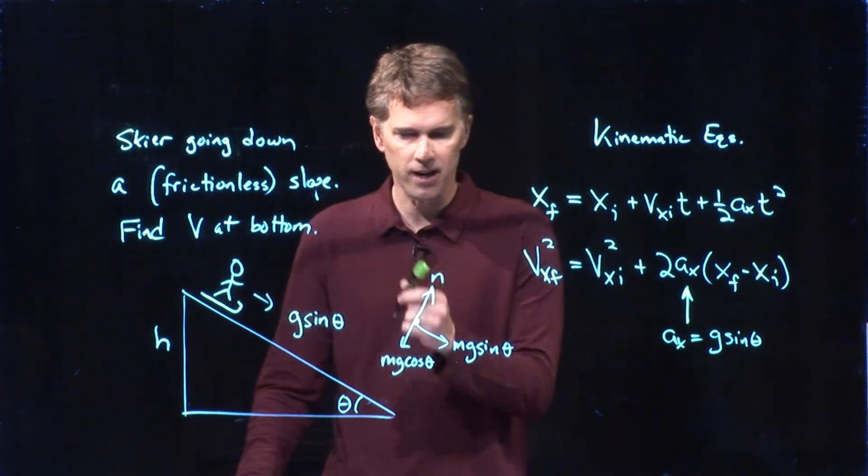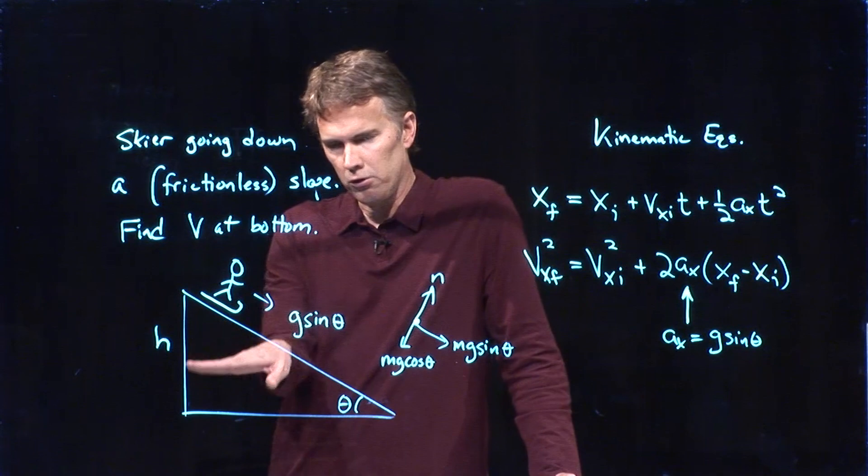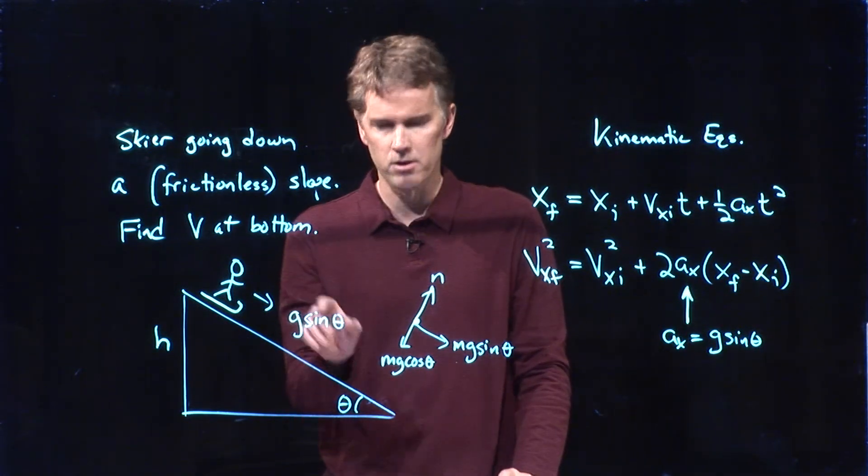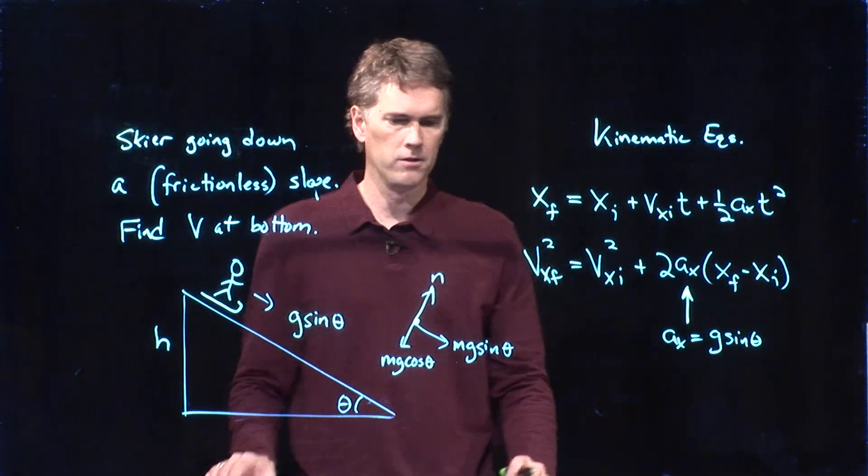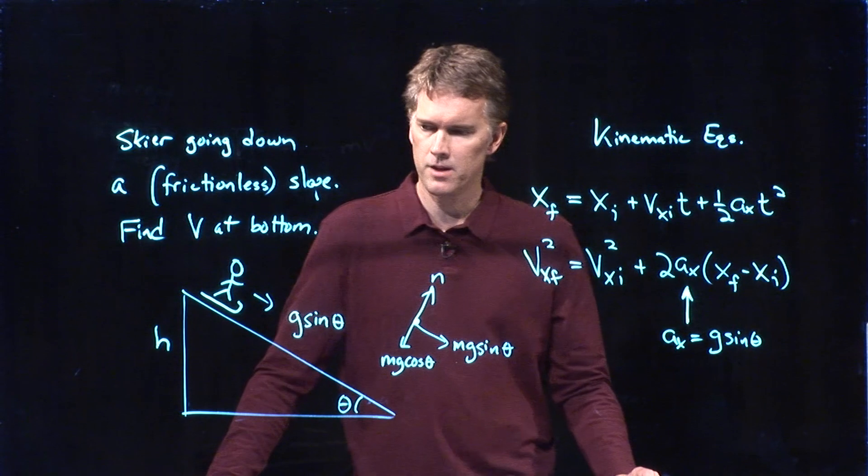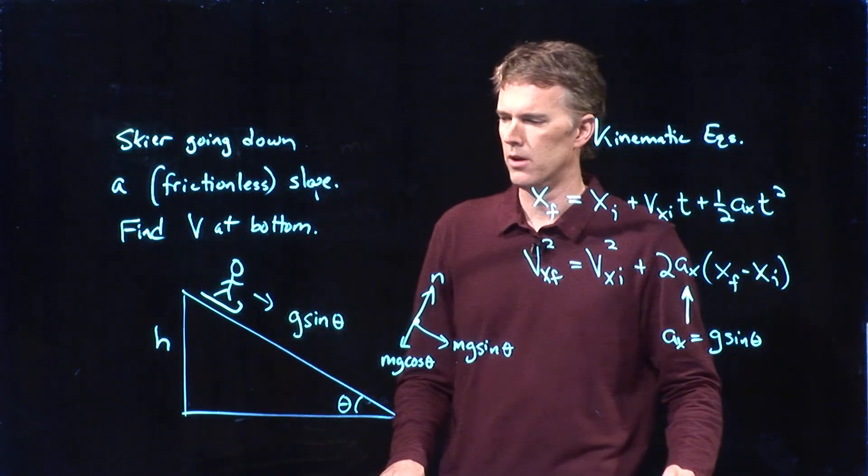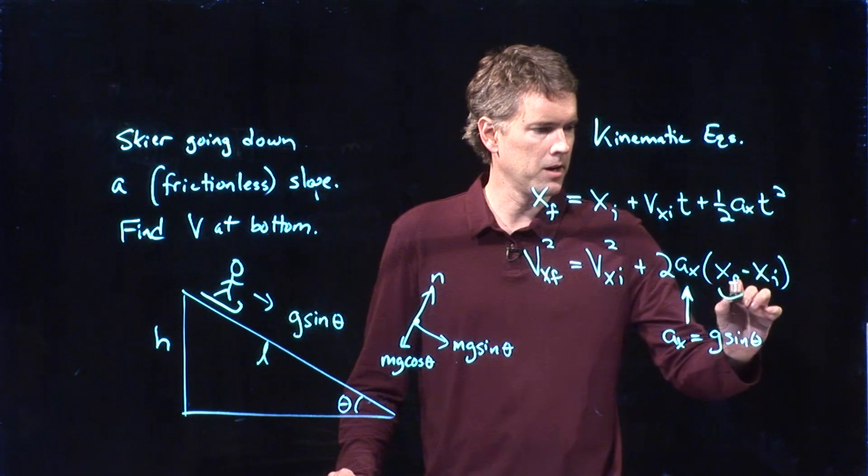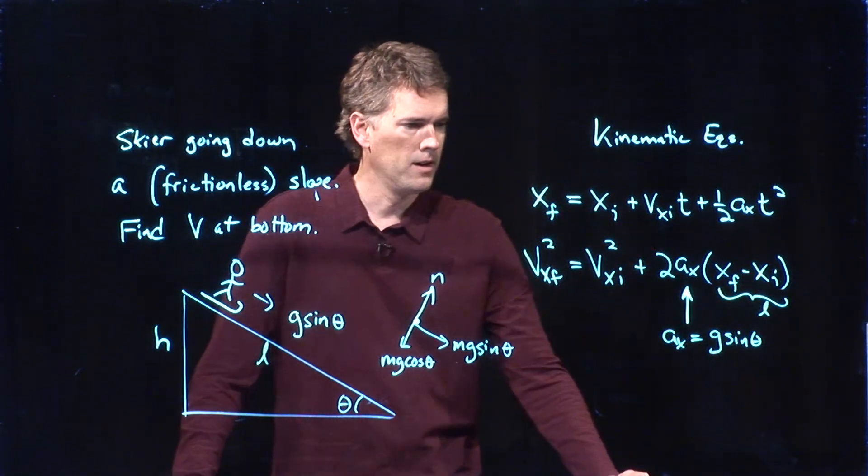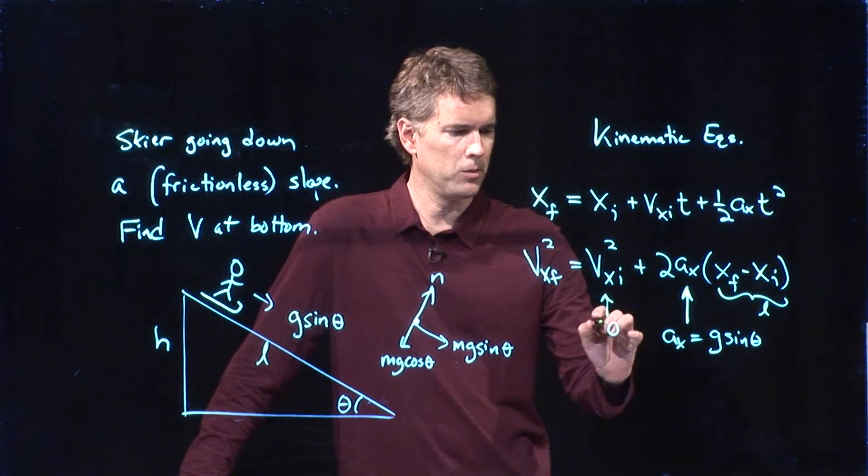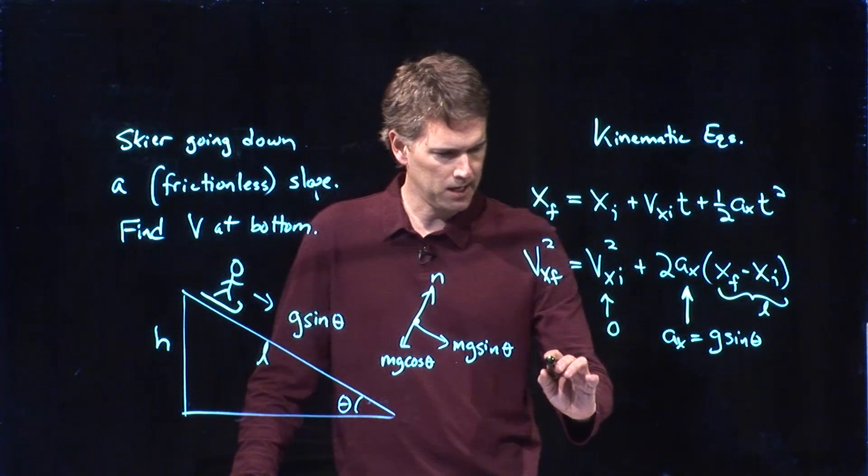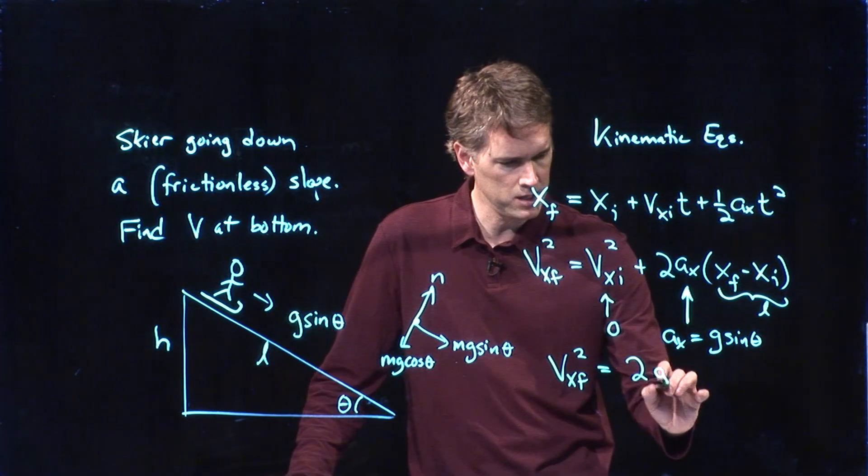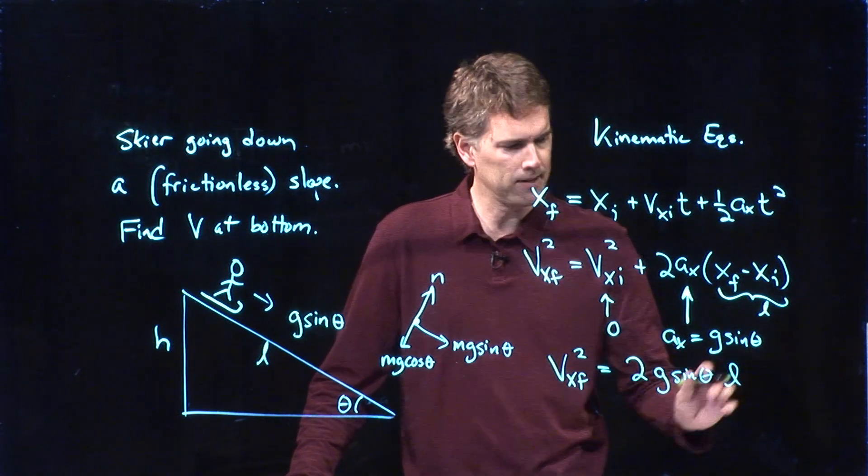Now, how do you know that? How do you know it's sine theta and not cosine theta? Because if it goes flat and theta goes to zero, I had better not have any acceleration horizontally. Sine of zero goes to zero. Cosine of zero goes to one. So that's how you can double check that. All right. What about this x final minus x initial? Well, that's just how far I go. So let's call this hypotenuse L. So this thing right here is just going to be L. And vx initial, we'll say we start from rest up there.